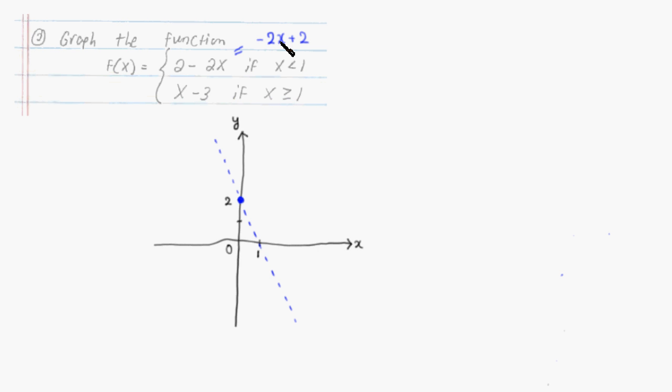Then what we need to do is pay attention to this restriction. It says that x has to be less than 1, so we can only keep the part on the left-hand side of x equals 1. And since this is a strict inequality,